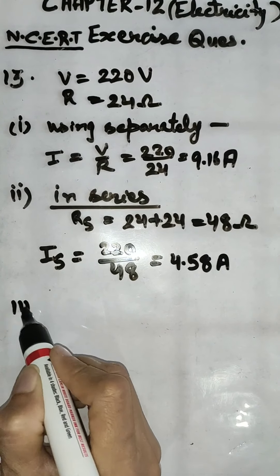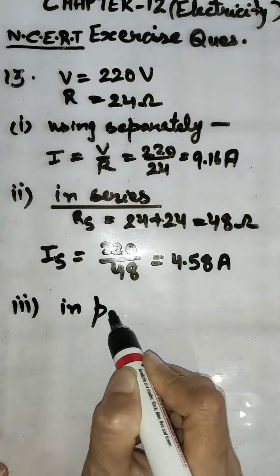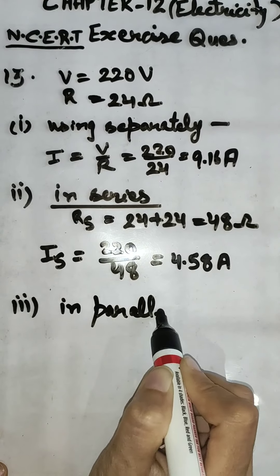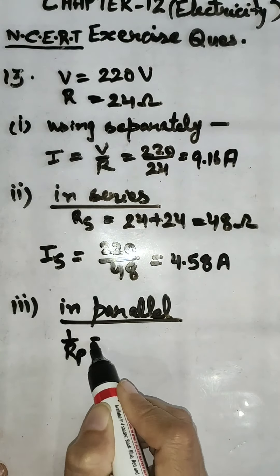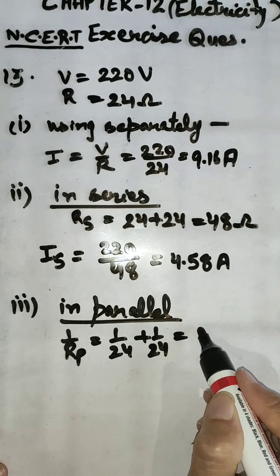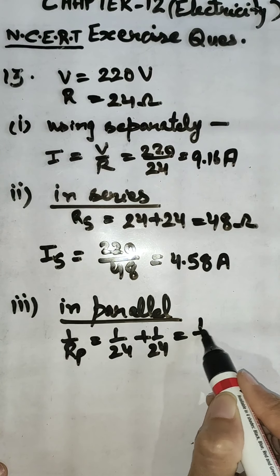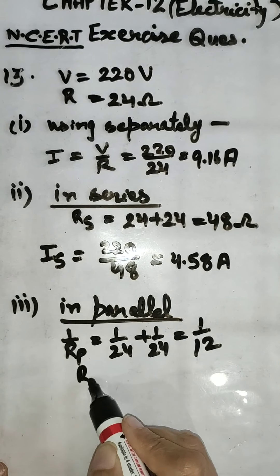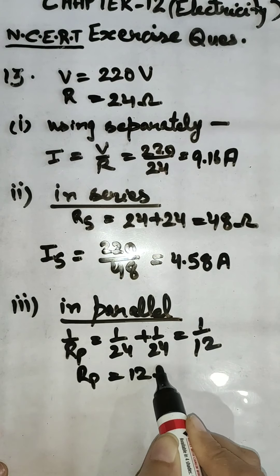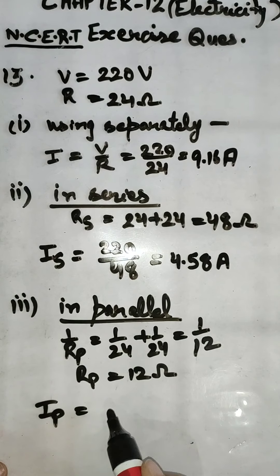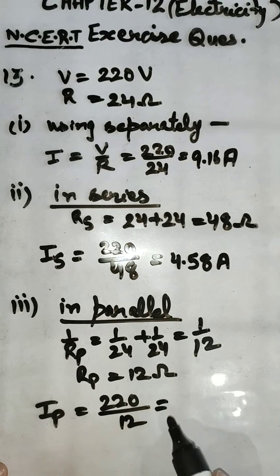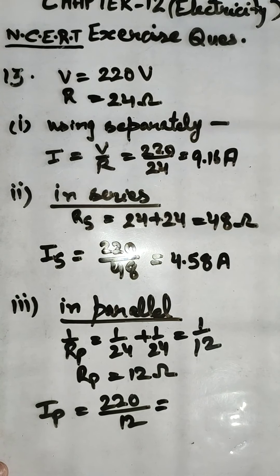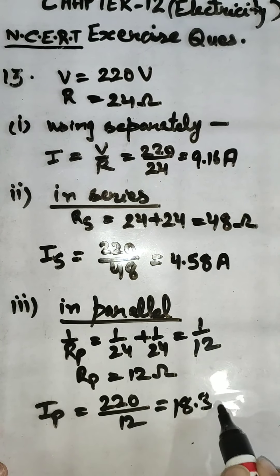And in third case when they are connected in parallel. 1 by Rp is equal to 1 by 24 plus 1 by 24. It will be 2 by 24, that is 1 by 12. So Rp is equal to 12 ohm. Therefore Ip is equal to 220 divided by 12 and we will get this answer as 18.3 ampere.